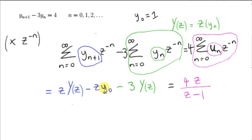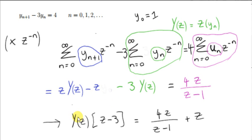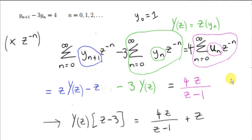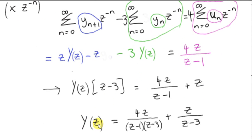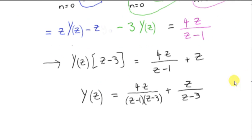Notice that we have little y₀, the initial condition, which equals 1. So we have minus z times 1. To solve the difference equation, we need to isolate big Y(z), the z-transform of little y(n). I've factorized Y(z) out of the left-hand side and added z to both sides. So here is big Y(z).